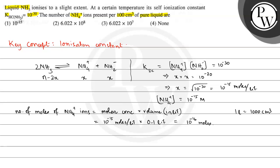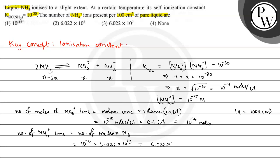Now we have the number of moles; we need to find the number of ions. The number of NH4+ ions equals the number of moles multiplied by Avogadro's number Na. This is 10 raised to the power minus 16 multiplied by 6.022 into 10 raised to the power 23, which equals 6.022 multiplied by 10 raised to the power 7.